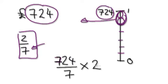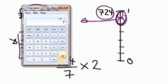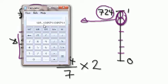Get a calculator out. So: seven hundred and twenty-four divided by seven — you're splitting it into seven equal parts — and each part represents one hundred and three pounds and forty-three pence. Now you're giving two parts, so times that by two.